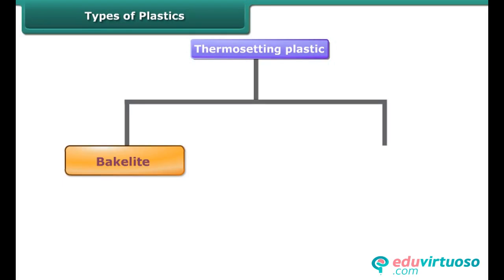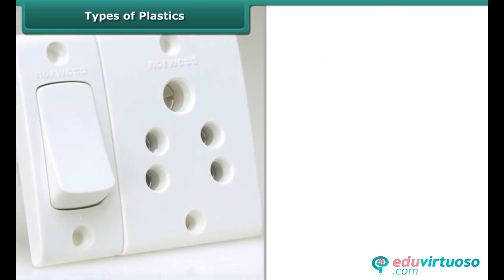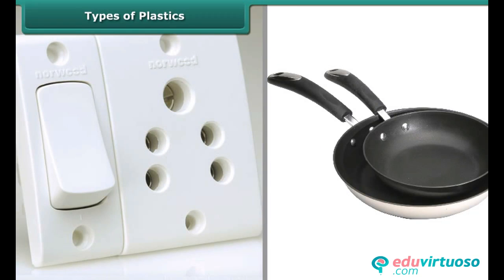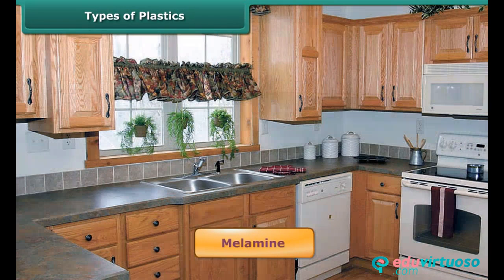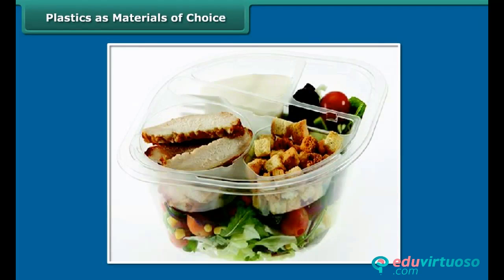Bakelite and melamine are two examples of thermosetting plastics. The familiar electrical switches and handles of utensils are made of bakelite, as it is a poor conductor of heat and electricity. Whereas melamine is used for making floor tiles and kitchenware, and certain fabrics, as it is fire resistant.